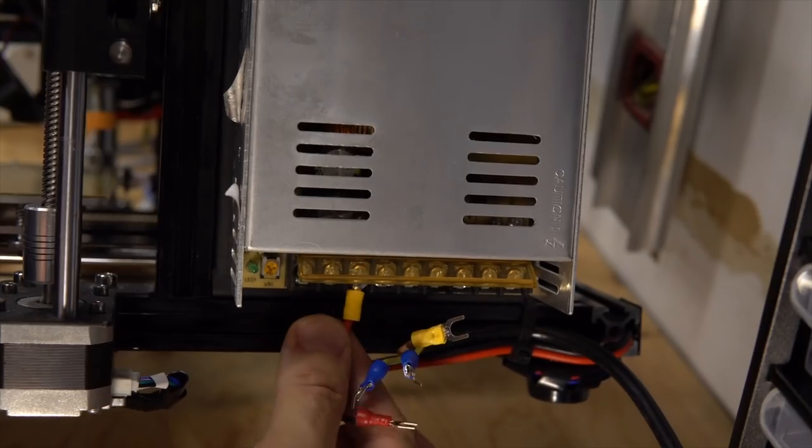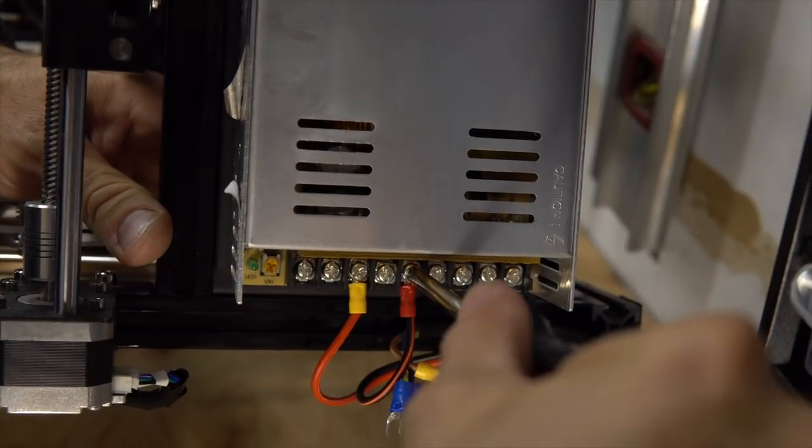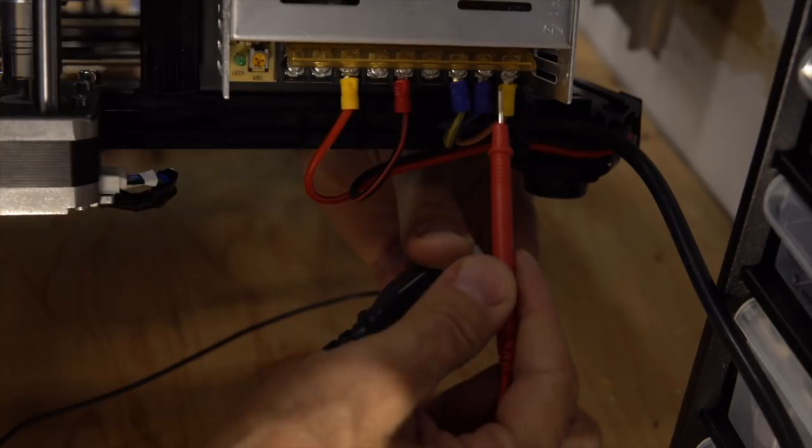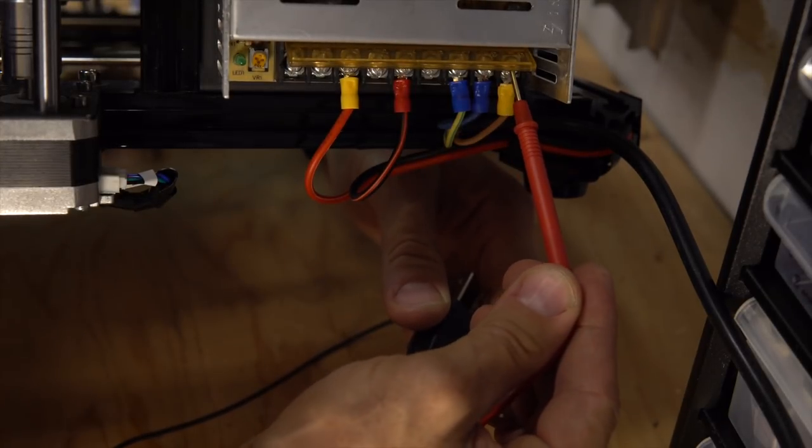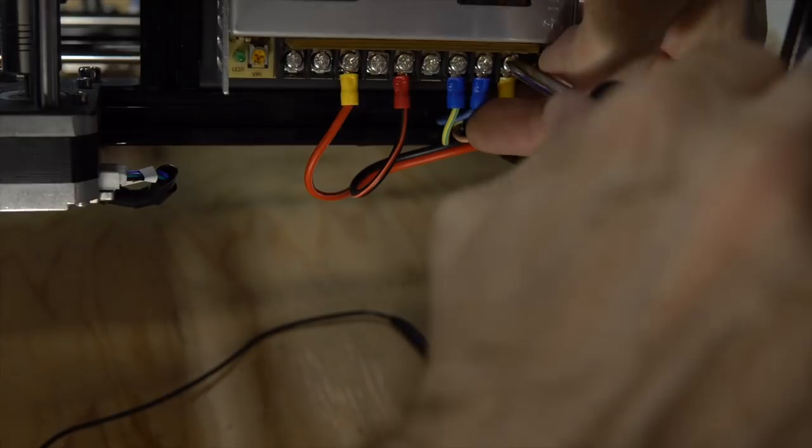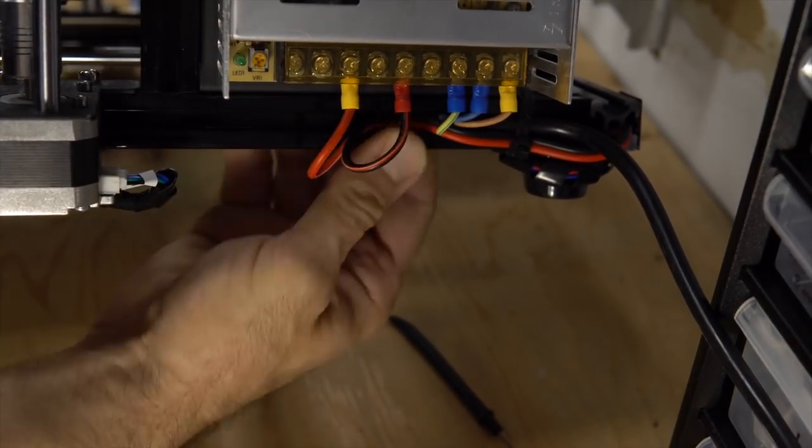And I also added some crimp connectors to make things easier and to make good contact for the power supply connections. I make sure that I have the right connection at the right place. So I have made the same modification on my other printers and we will see the difference. I'm gonna show when the fan is on and off.